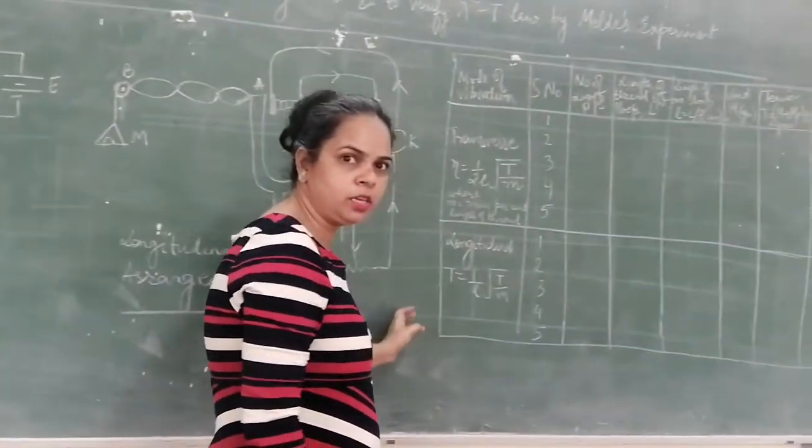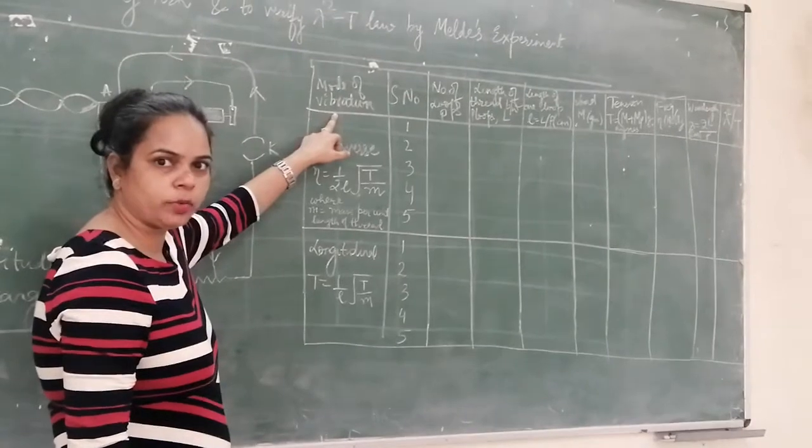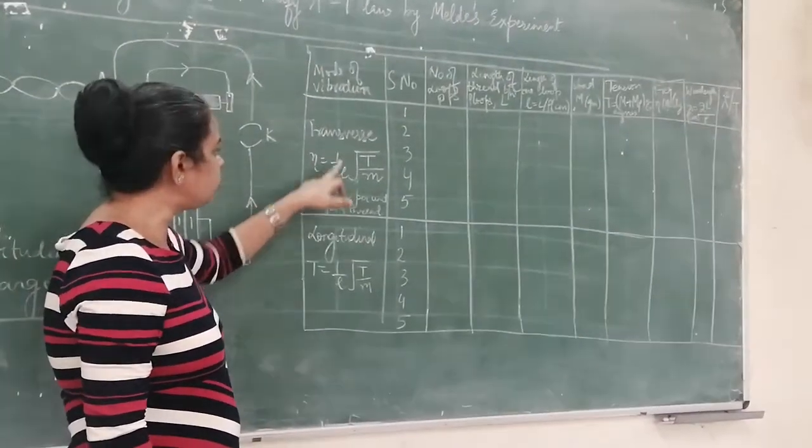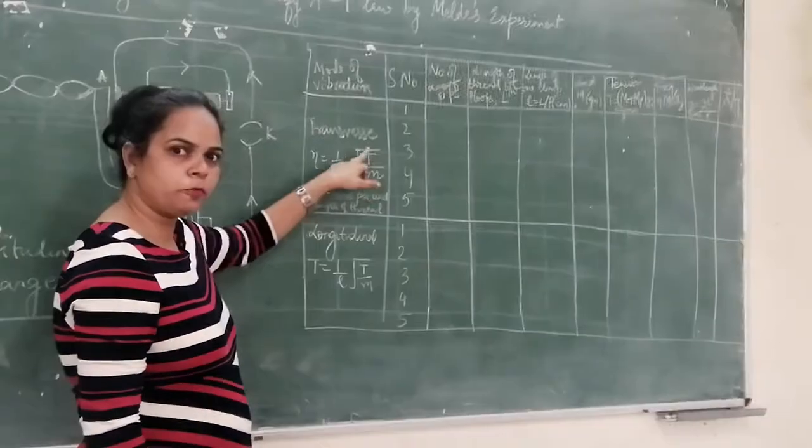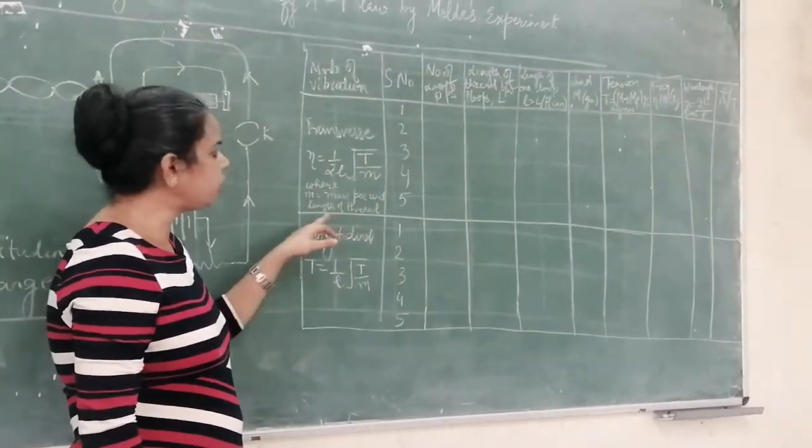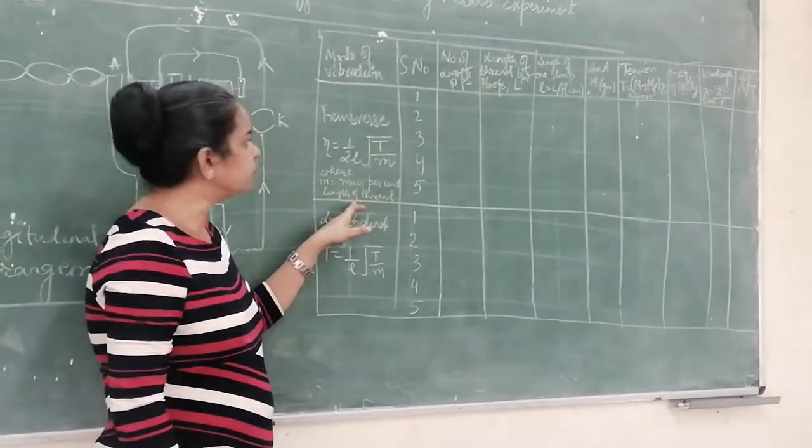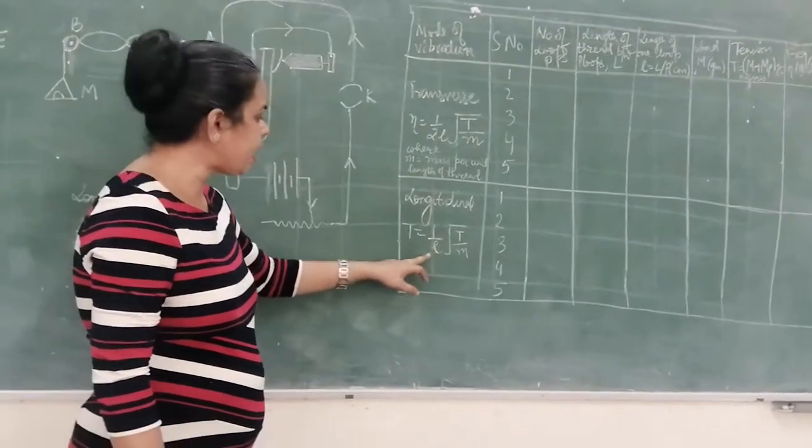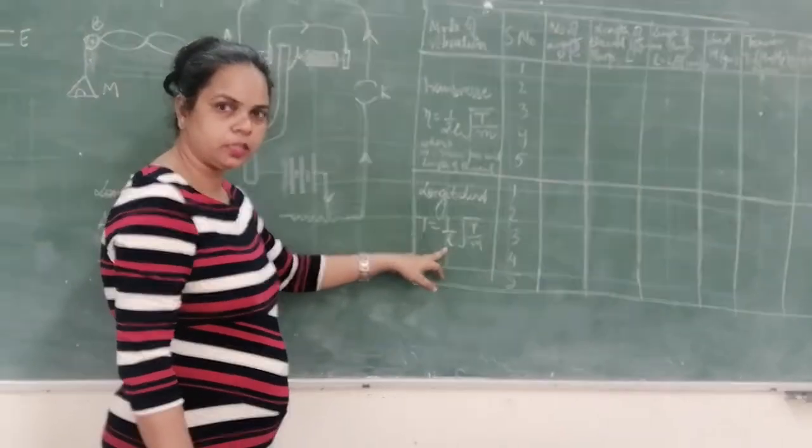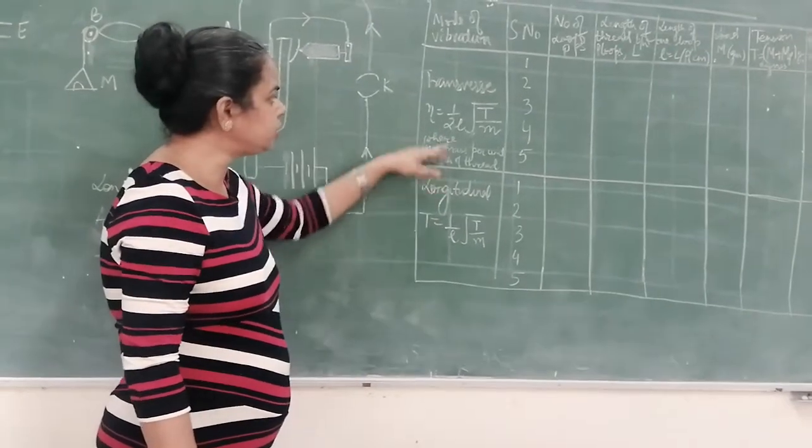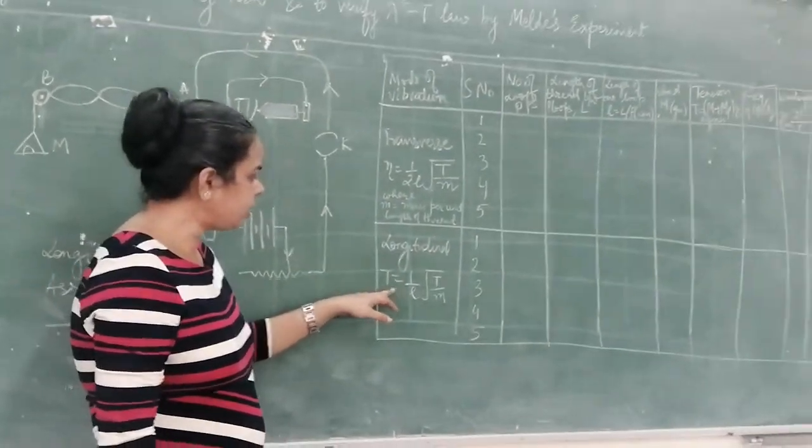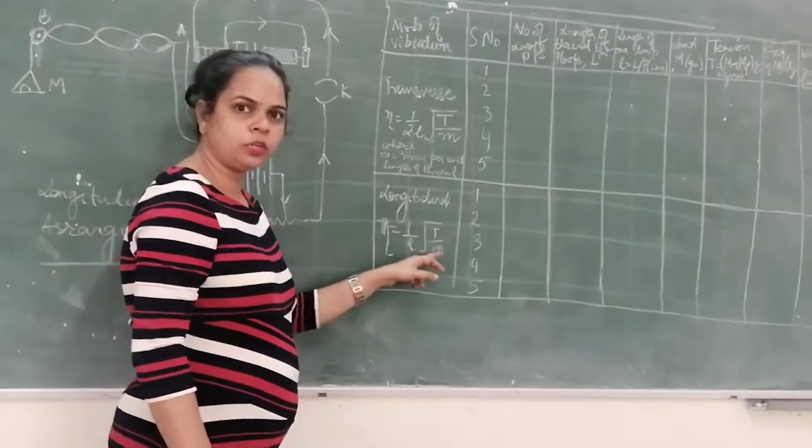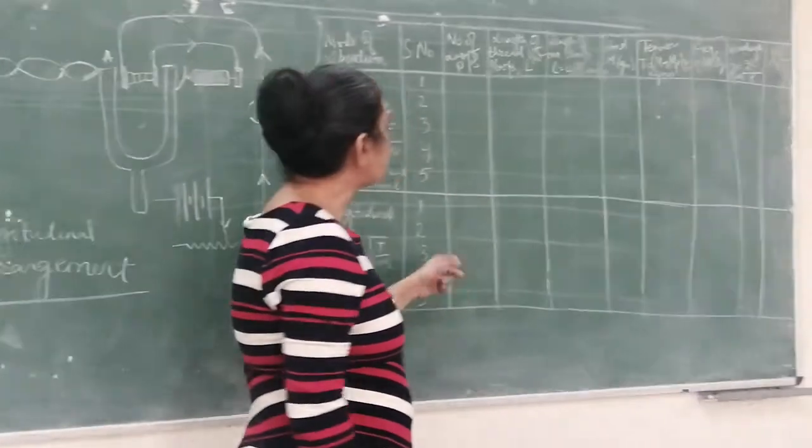This is the observation table. In the observation table, we have to calculate the frequency. For transverse, we have the frequency formula that is eta equals 1 by 2L under root of tension upon mass per unit length of the thread. And for the longitudinal, we have the formula eta equals 1 by L. Here, the factor of 2 is not there. The basic difference in this formula is the factor of 2. Longitudinal has the formula eta equals 1 upon L under root T by M.